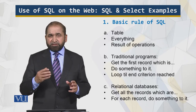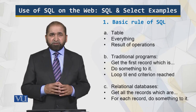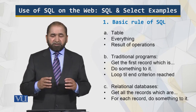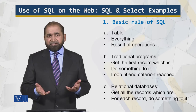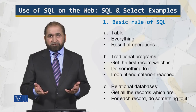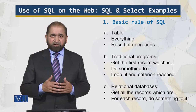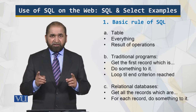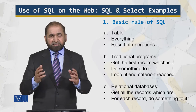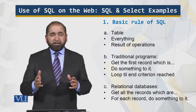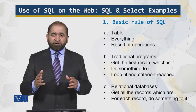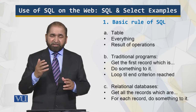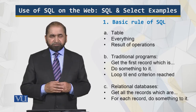The basic rule of SQL — the same thing we discussed in the prior modules — is that everything is a table in the relational model, which is the SQL database. Everything is a table, and the result of an operator on a table also results in a table.